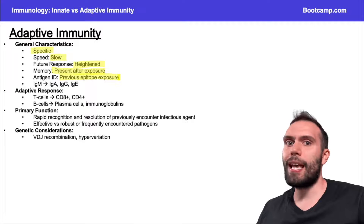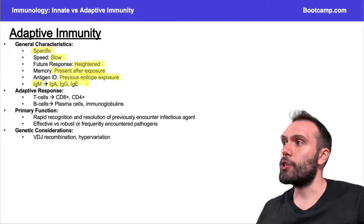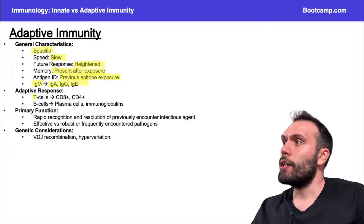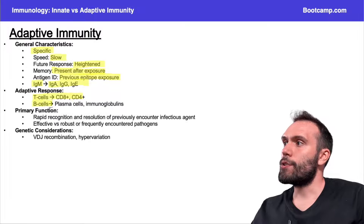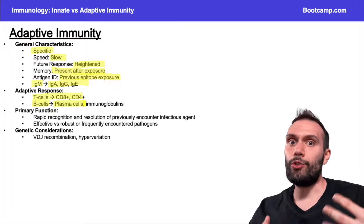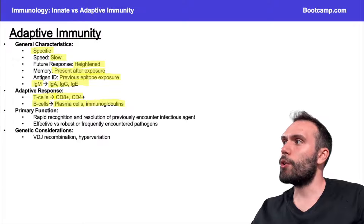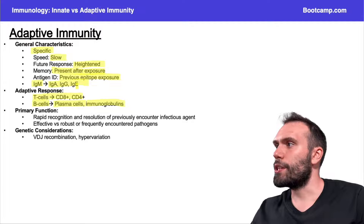There's some previous epitope we were exposed to that we're targeting — it bound to IgM initially, and eventually we'll have class switching, which we'll go through. The key players to remember are T cells — CD8 and CD4 — B cells that can turn into antibody-producing factories called plasma cells, and specific immunoglobulins after class switching. These are all part of the adaptive immune response, and I'll go through all of this in a moment.